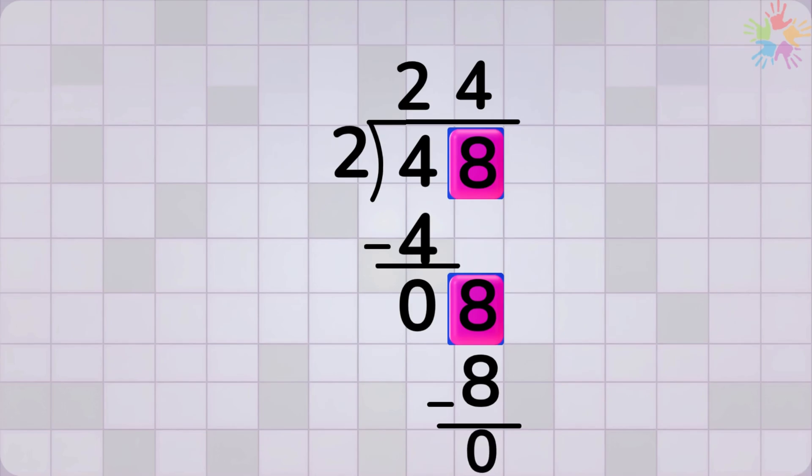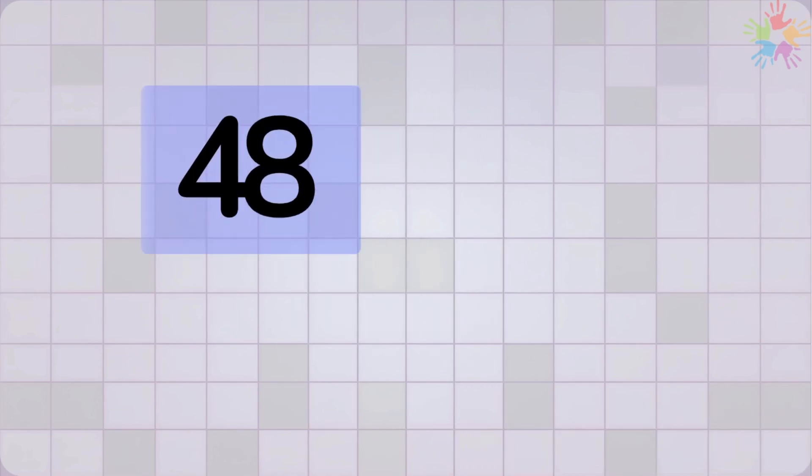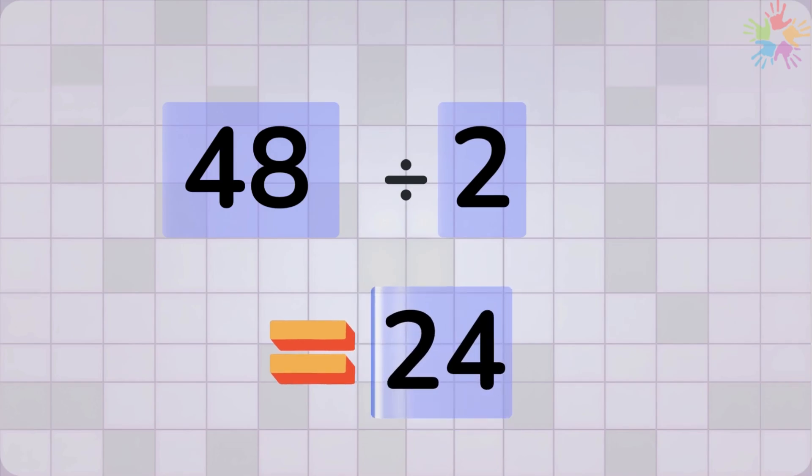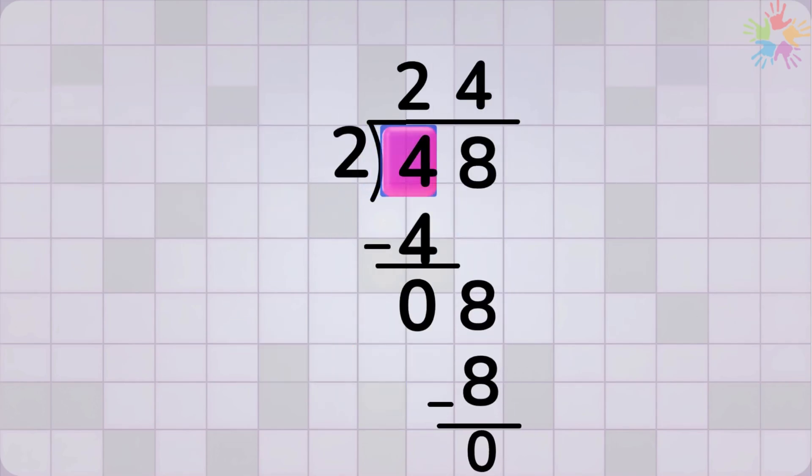Now there are no digits left to bring down and no remainder. So the answer is 24. 48 divided by 2 equals 24. Notice how we only focused on 1 digit at a time. That is the secret of long division.